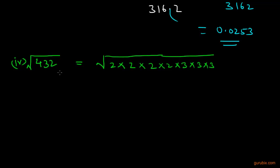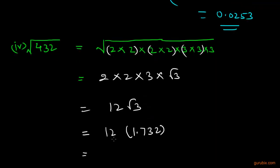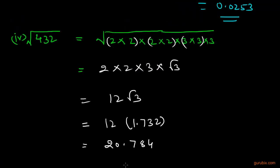Factorizing 432 gives 2 × 2 × 2 × 2 (four times) × 3 × 3 × 3 (three times). Pairing the factors and taking one from each pair gives 2 × 2 × 3 × √3 = 12√3. Using the square root table, √3 = 1.732, and multiplying 12 × 1.732 gives 20.784. So the square root of 432 is 20.784. Thank you.